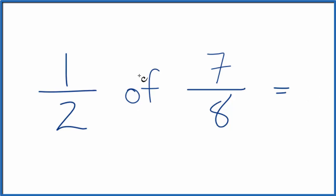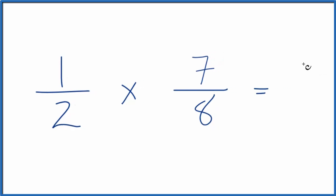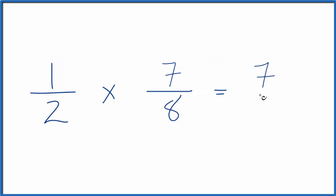We can think of the of as multiplication. And that makes this a lot easier. Now we just take the numerators, we multiply the numerators. 1 times 7, that gives us 7, and 2 times 8 is 16.